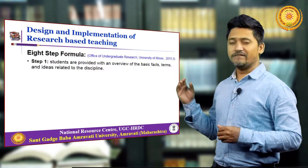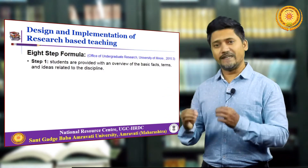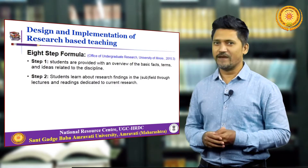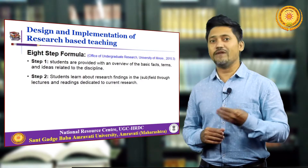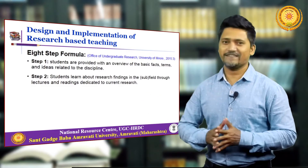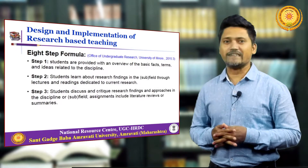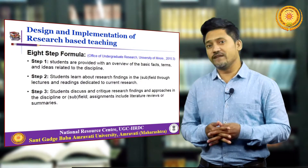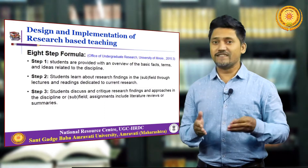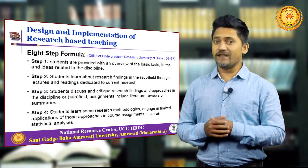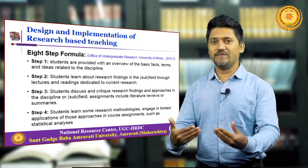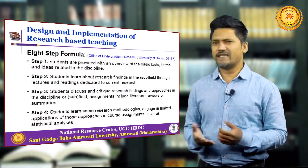A study of existing practices at the University of Illinois mentions eight steps in which research-based teaching is implemented. Step one: students are provided with an overview of basic facts, terms and ideas related to the discipline. Step two: students learn about research findings in the subfield through lectures and readings dedicated to current research. Step three: students discuss and critique research findings and approaches; assignments include literature reviews or summaries. Step four: students learn some research methodologies and engage in limited applications of those approaches, such as statistical analysis.